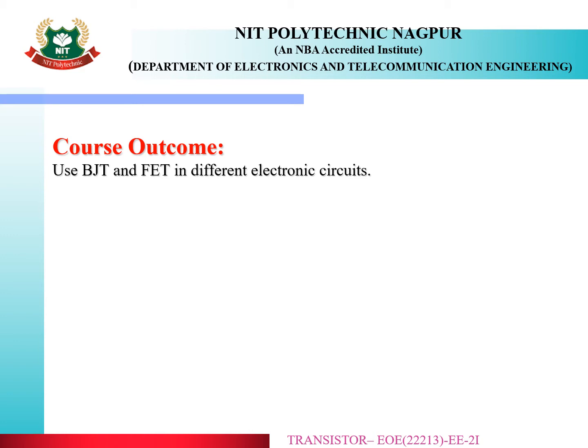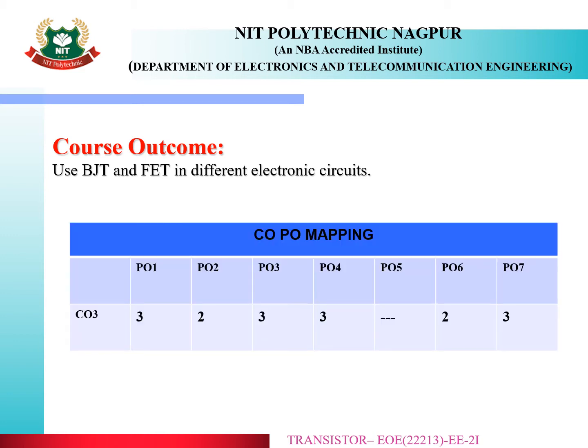Here, we can use BJT — the Bipolar Junction Transistor — and the Field Effect Transistor to design different electronic circuits, and we will understand the use of BJT and FET. The chart shows the CO and PO mapping. CO3 is getting mapped with PO1, 3, 4, 6, 7, and 2. This CO3 getting mapped with all these POs was studied in the last lecture.